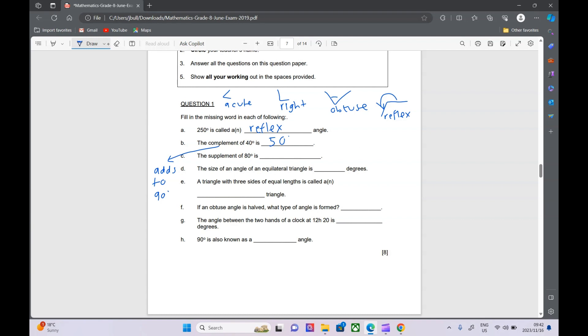Supplement is kind of similar. Supplement means it adds up to 180. So if I've already got 80, I want it to be 180, then that is going to be 100 degrees that I need there. Complement adds up to 90, supplement adds up to 180.